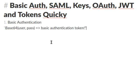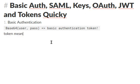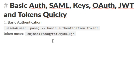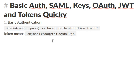When we say token, we mean something like a string. When we do base64 on a username and password, we put it in a header and then we transfer it to the server. The server sees that we know what the username and the password is, so it allows us to access it.